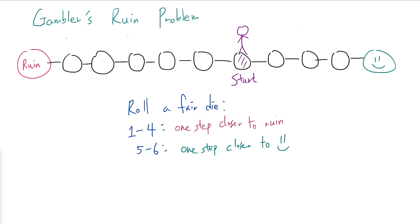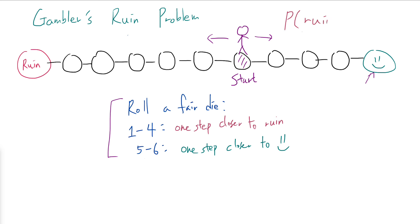Let's consider the following version of a gambler's ruin problem where we have a player starting in some position, and we keep rolling a fair die at each step such that if we roll 1 through 4 we move one step closer to ruin, whereas if we roll 5 or 6 we move one step closer to a smiley face where we get some sort of huge prize. A natural question is: what is the probability of getting ruined?